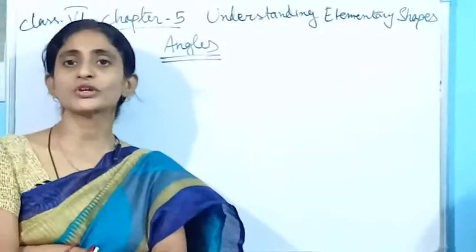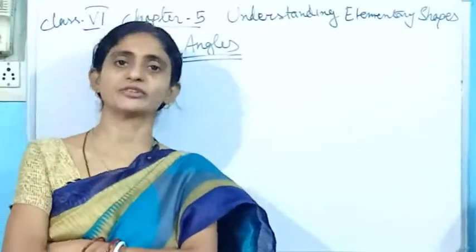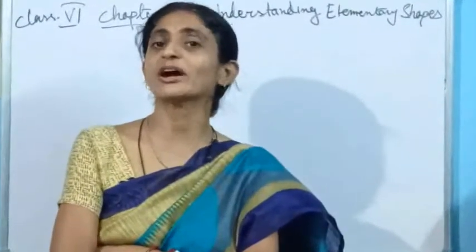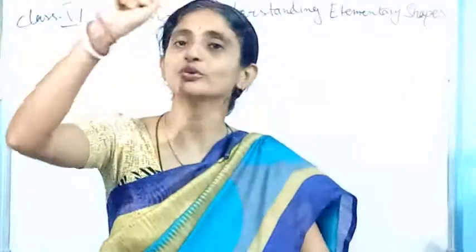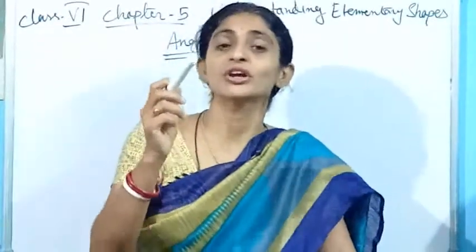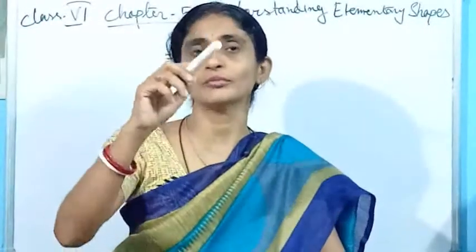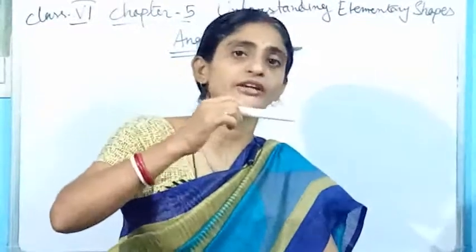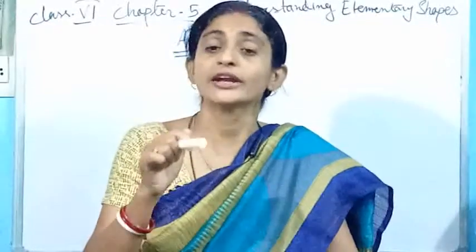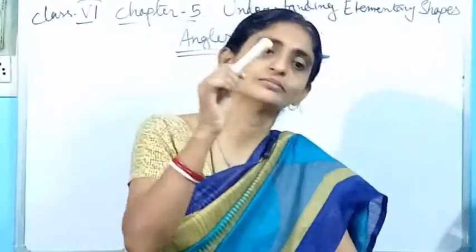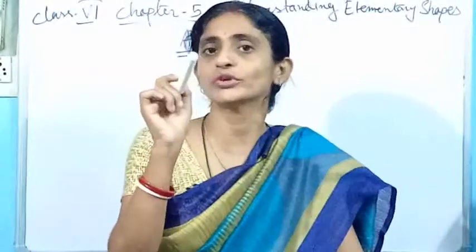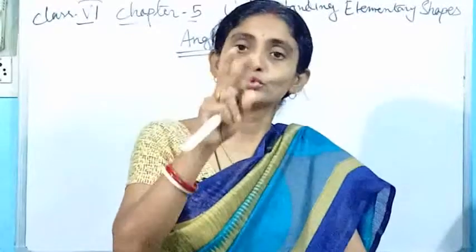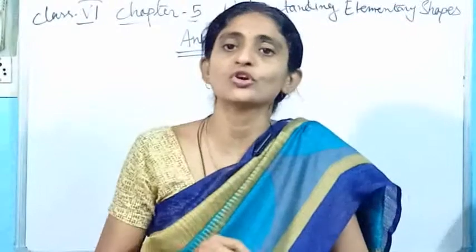Welcome children, today we are going to start the second part of angles. In the previous part, we discussed the part of revolution. We took the example of a clock hand moving from one number to another, and turning from one direction to another — north, south, east, west. From that discussion, we discussed the right angle, and when two right angles were there, that was considered as a straight angle.